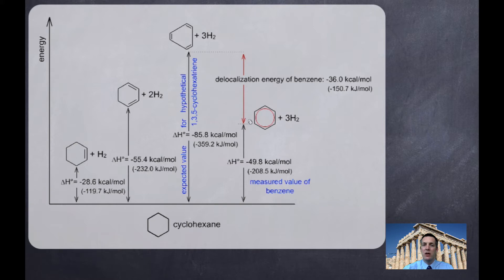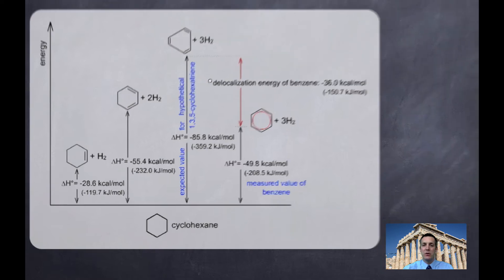And remember that by delocalizing electrons, molecules can become more stable. And so, the fact that this enthalpy change is so much smaller than we would expect it to be leads us to believe that perhaps there is some stability that has come about from somewhere. And maybe we could use that as evidence to suggest that these electrons have spread right out instead of being confined to these single and double bonds.